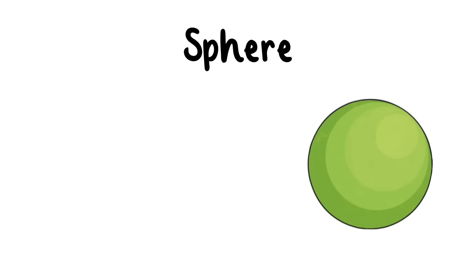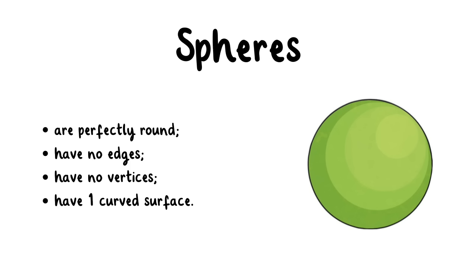This is a sphere. Spheres are perfectly round, have no edges, have no vertices, and have one curved surface.